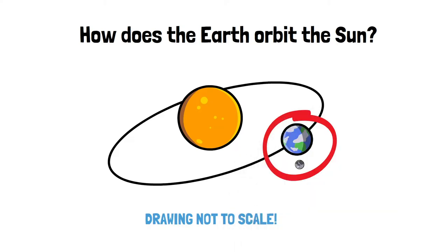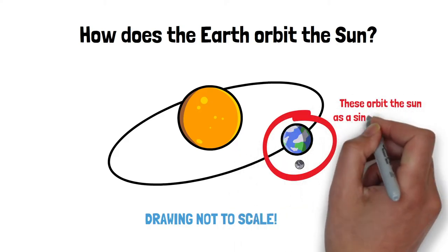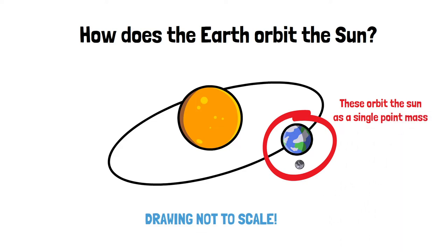However, in astronomical scales, the gravitational field of the Sun doesn't really differentiate between the Earth and the Moon, resulting in the two bodies acting as a single point mass orbiting the Sun.